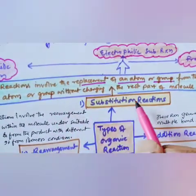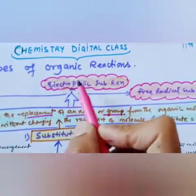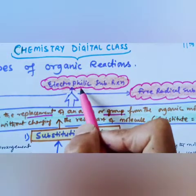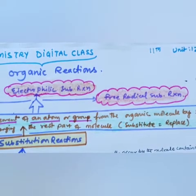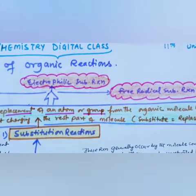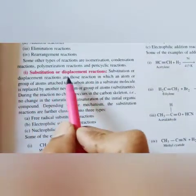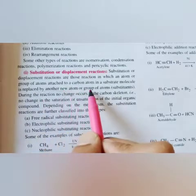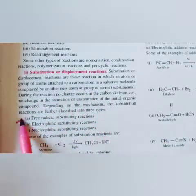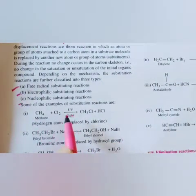Substitution reactions are of three types: nucleophilic substitution reaction (due to a nucleophile), electrophilic substitution reaction (due to an electrophile), and free radical substitution reaction (due to homolytic cleavage). Substituent or displacement reactions are those in which an atom or group attached to a carbon atom in a substrate molecule is replaced by a new atom or group, depending on the mechanism.